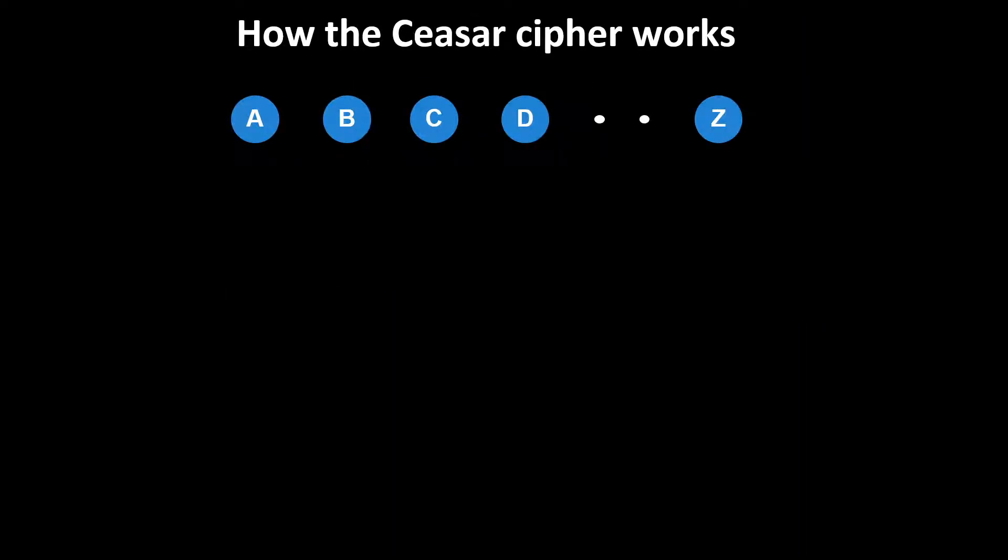So how does the Caesar cipher work? It is quite simple. We have 26 letters in the alphabet, and each letter is shifted a specific number forward in the alphabet. For example, if we use a shift of 3, then A would be shifted forward three letters in the alphabet, so A would become D. Similarly, B becomes E, C becomes F, and D becomes G.